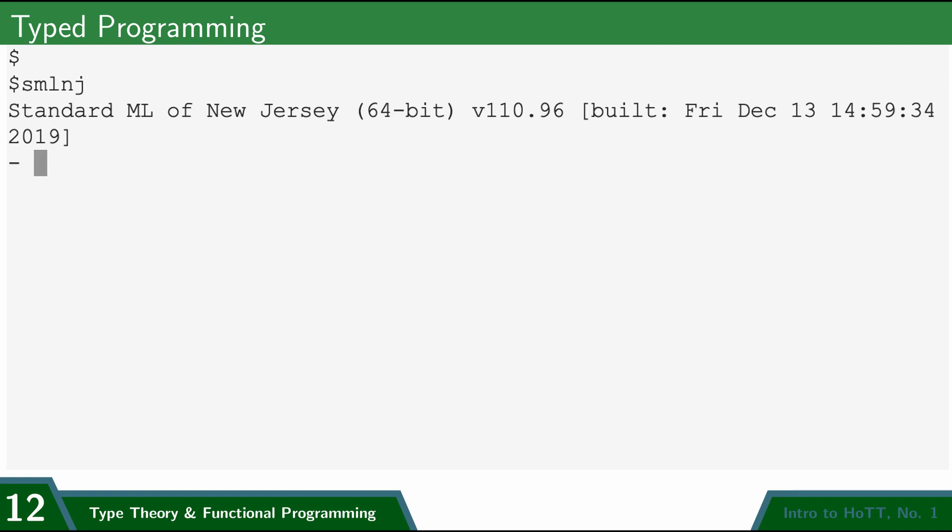So here I'm interacting with sml in the terminal, and so I can do things like type in expressions, like this, and evaluate them. And so it tells me that 3 plus 3 is equal to 6. I can also declare variables, like this, so I can say val n is equal to 4, and then I can use those variables. So n plus 1 gives me 5. Pretty simple.